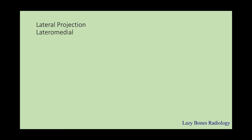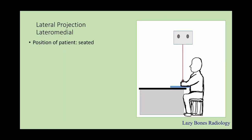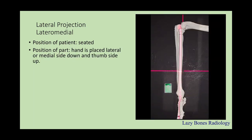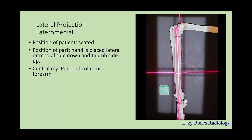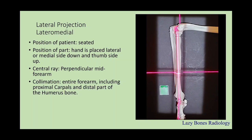Lateral projection, or lateral medial projection. The patient is seated. Position of the part: the hand is placed on the lateral position, or medial side up. It is very important that the radius and ulna are superimposed so you can get a proper lateral projection. Central ray is perpendicular to mid forearm. Make sure to collimate the entire forearm including the proximal carpals and the distal humerus. Arms at a 90-degree angle, and make sure the epicondyles of the humerus are superimposed. SID is 40 inches; remember to label correctly.